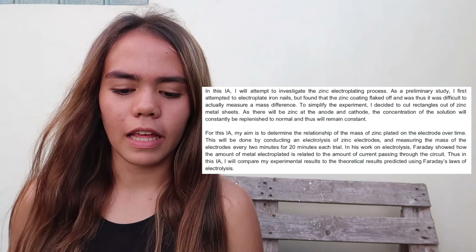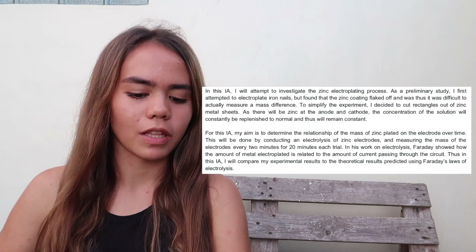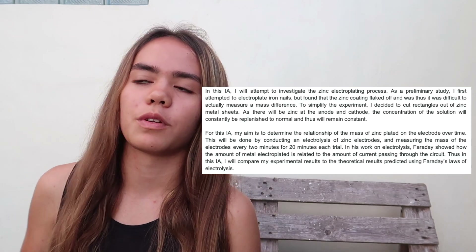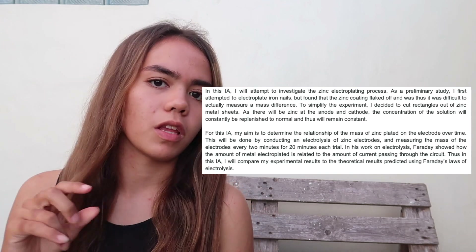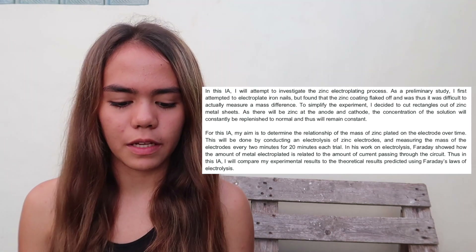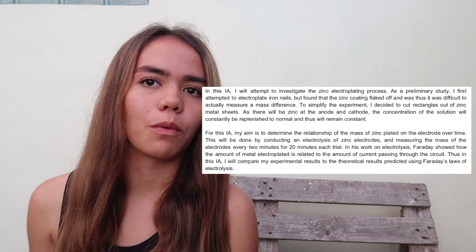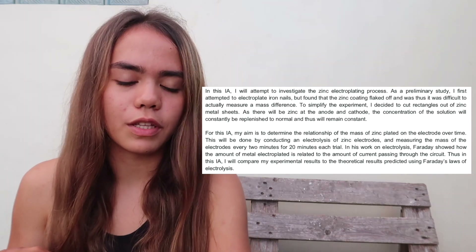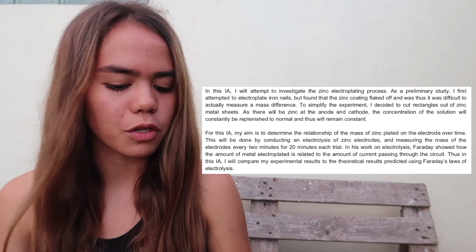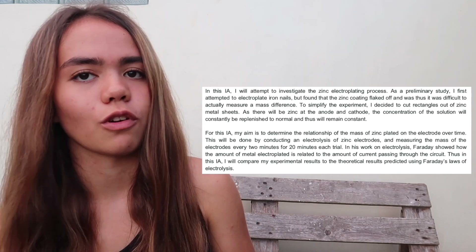In the next two paragraphs I explain how I came to my research question. I talk about how in a preliminary study I attempted some electroplating but it didn't work, so I simplified the experiment by cutting the zinc electrodes into sheets rather than using nails and coins. Then I talk about how Faraday's laws of electrolysis played in, and how I wanted to extend my work by not only doing the electrolysis but also using Faraday's theory to compare to my experimental results: 'Thus in this IA I will compare my experimental results to the theoretical results predicted using Faraday's laws of electrolysis.' Throughout my introduction I'm building justification and reason — it's highly structured, with a purpose for every part.